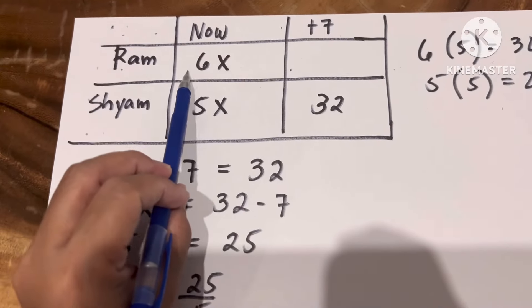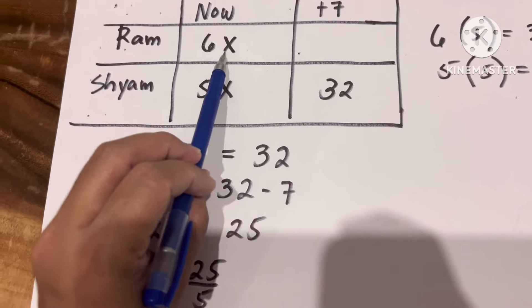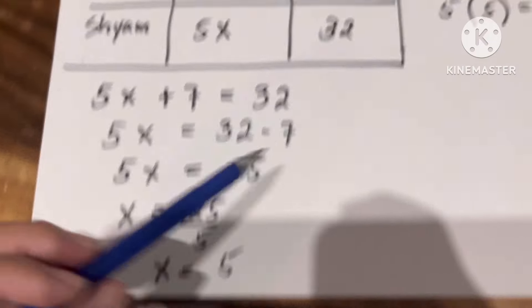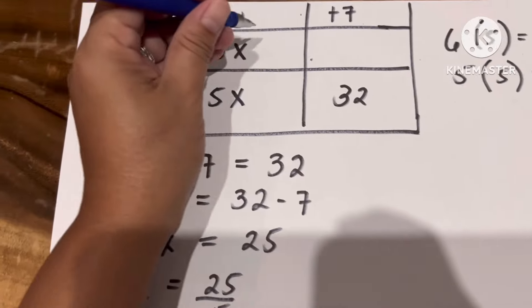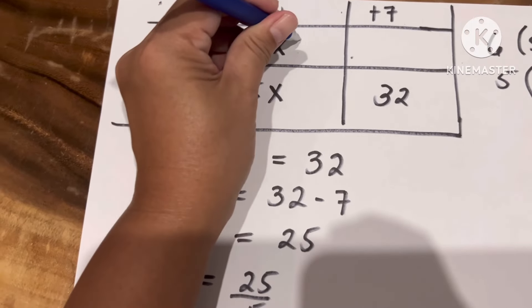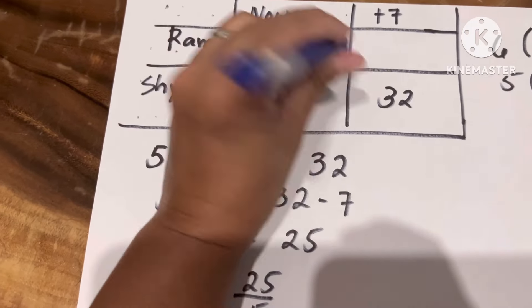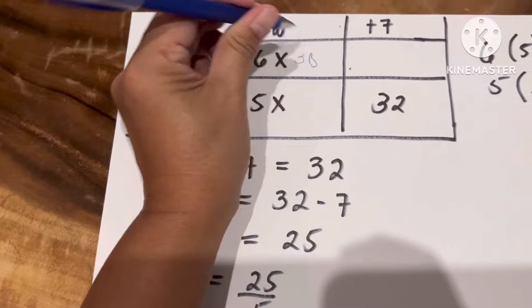This will become 6 times 5 because the value of X is 5. So 6 times 5 is 30, meaning the present age of Ram is 30.